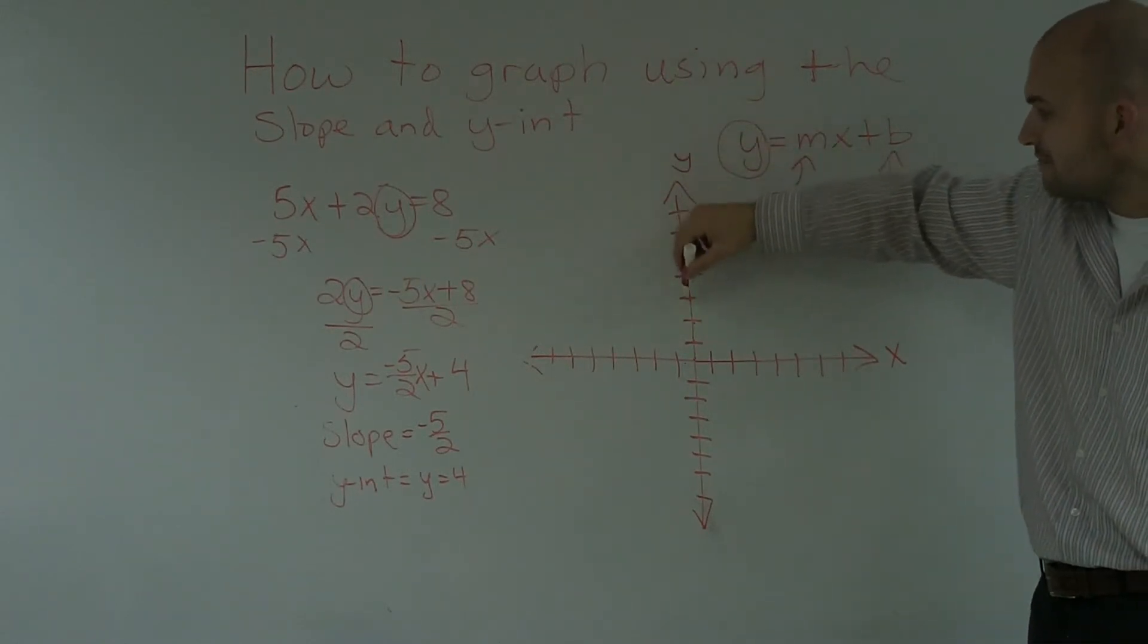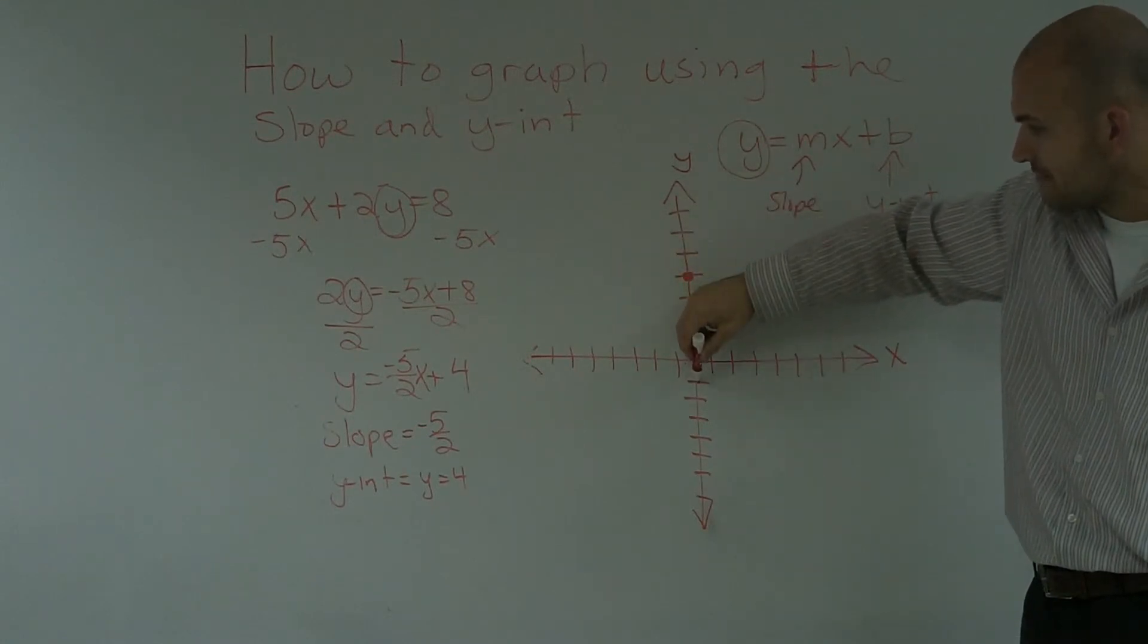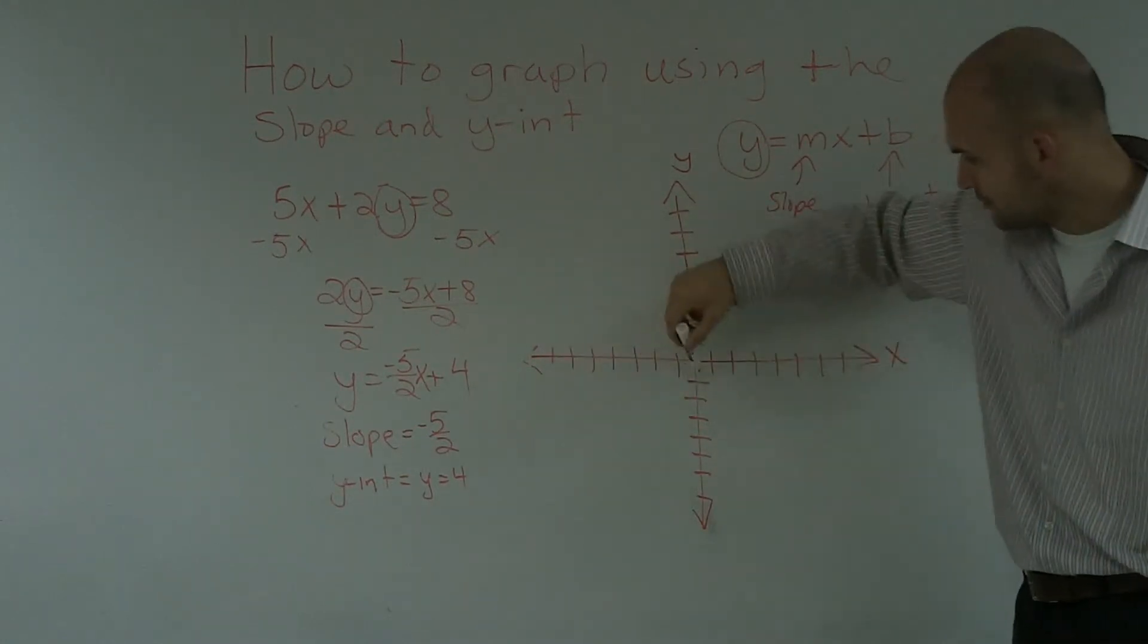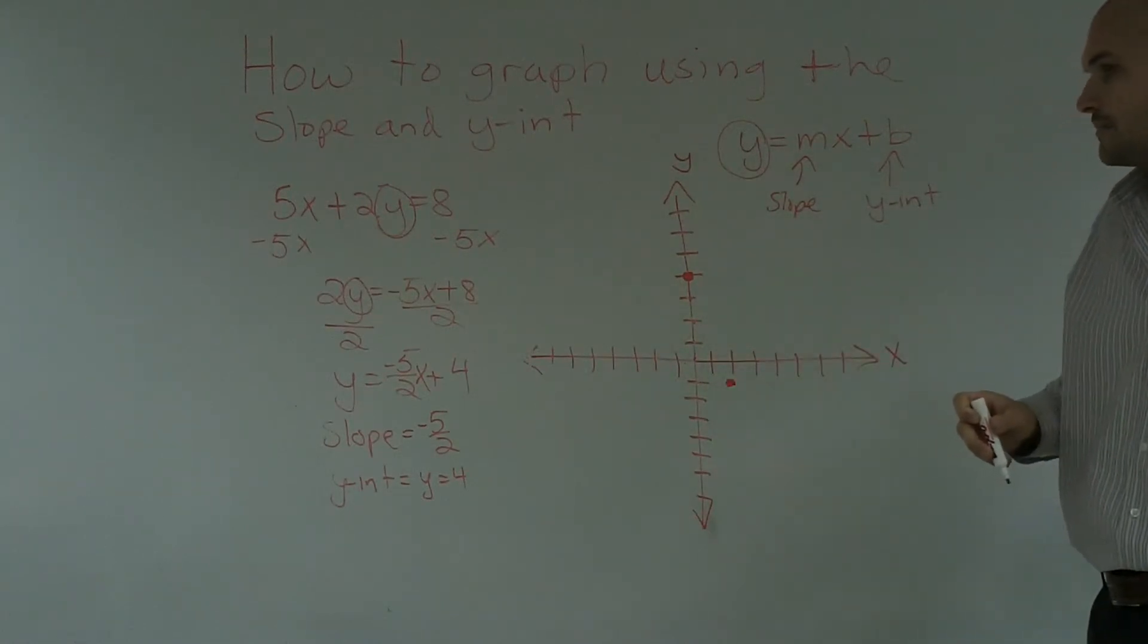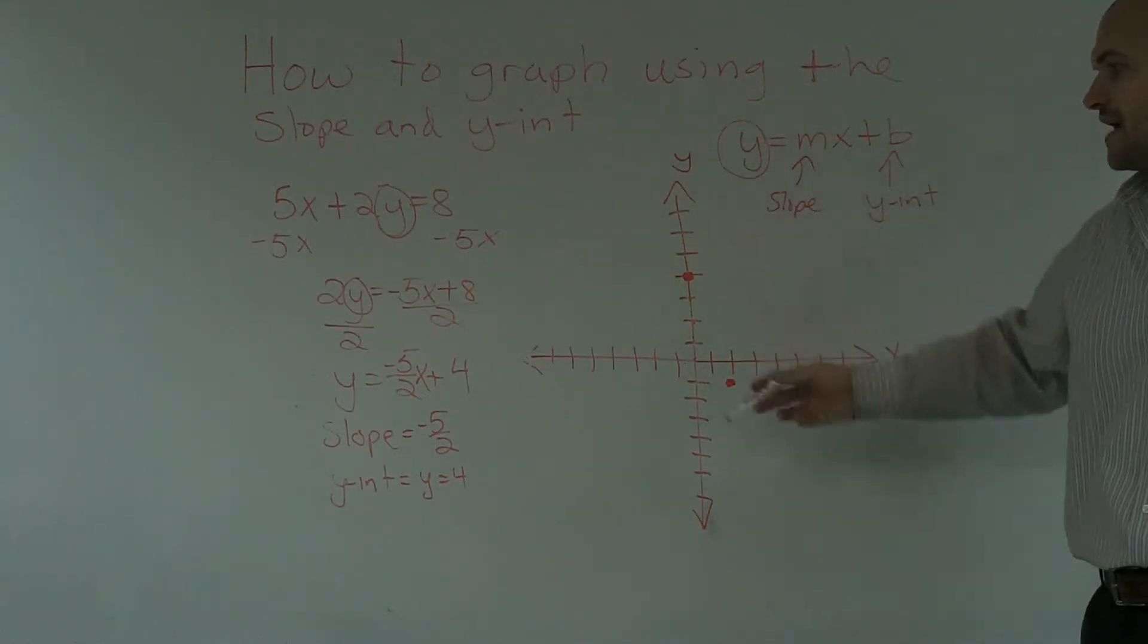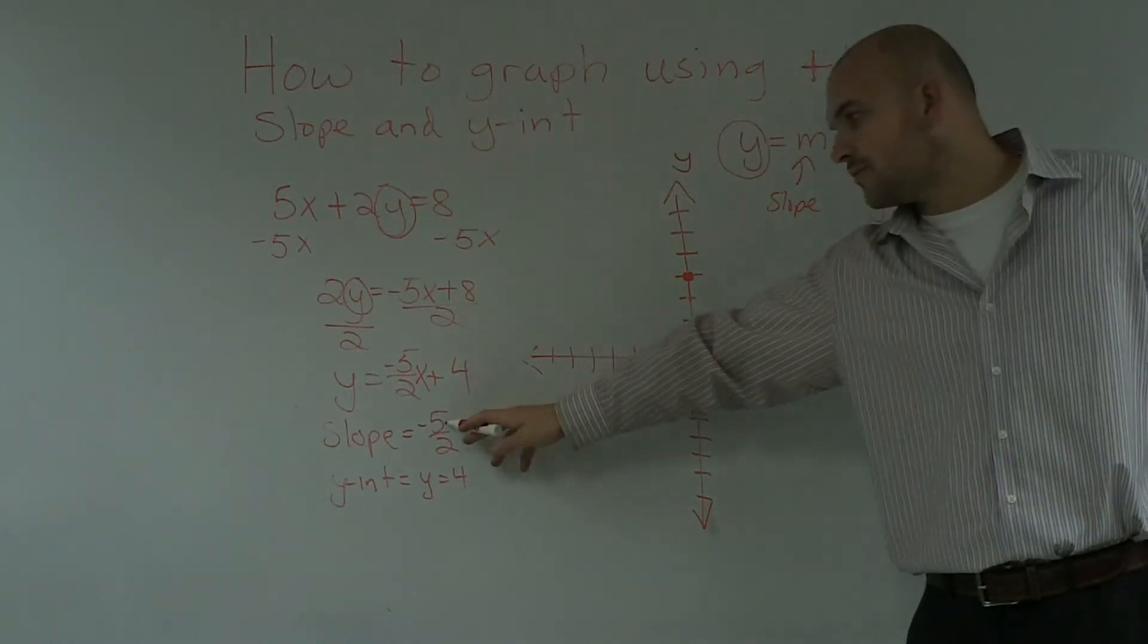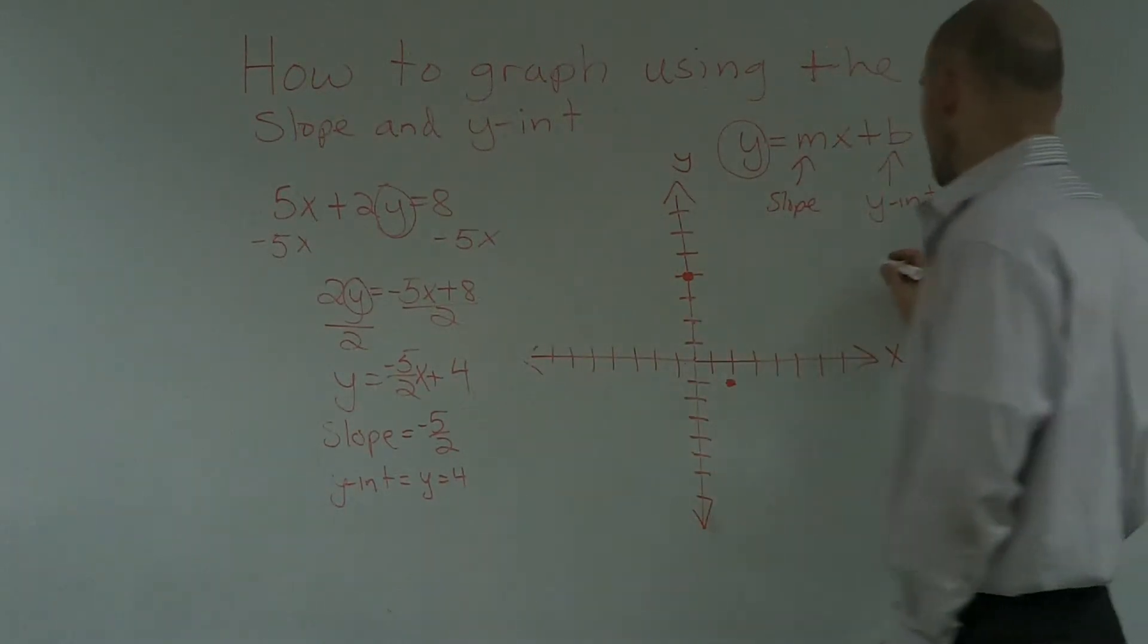So, I can go down 5. 1, 2, 3, 4, 5. And then over 2. Okay? Because this is going to be negative 5 over 2. Remember that when you're doing your change in y over change of x.